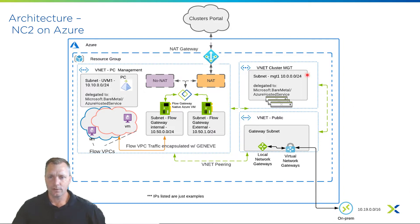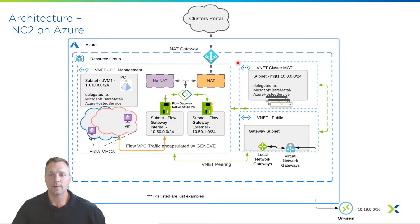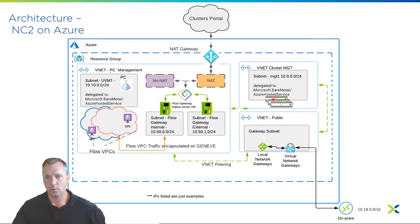We do require two Azure VNets. We have one for PC and one for cluster management. This cluster management is where we're going to deploy our bare-metal nodes to. You'll notice we have this delegated to microsoft.bare-metal slash Azure hosted service. In Azure, you're only allowed one delegated subnet per VNet, so that's why you'll see two VNets being the requirement.